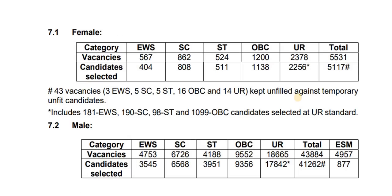Now, check the result and check the details. The total female is filled with IARTH. The EWS candidate is fully selected. The other candidate is also available. The ST candidate is less than the ST candidate. The OBC and UR is max full of IARTH.